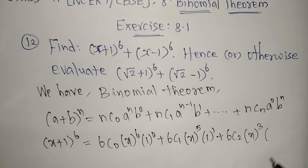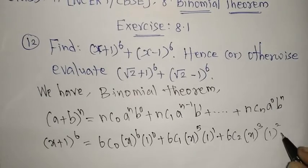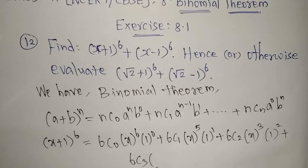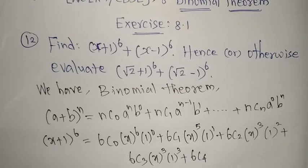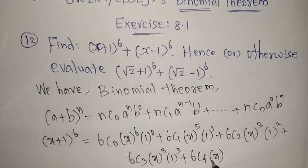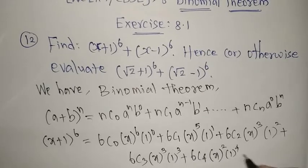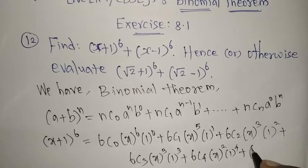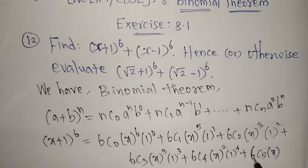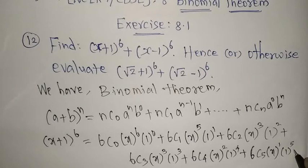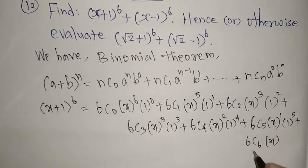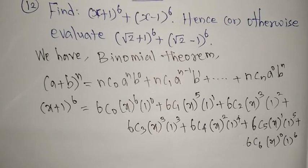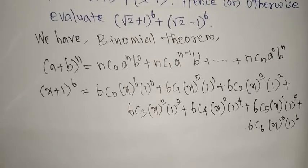Continuing: + 6C3 · x³ · 1³ + 6C4 · x² · 1⁴ + 6C5 · x¹ · 1⁵ + 6C6 · x⁰ · 1⁶. If you simplify this you will get one answer. Now listen carefully.